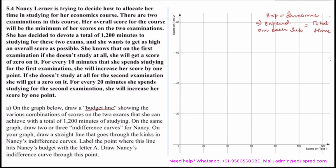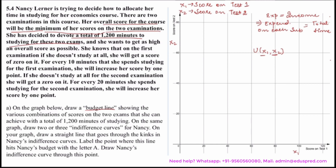Whenever you read such questions, don't get scared by them. We know that her overall score for the exams would be the minimum of the scores on two examinations. So her utility function would be taken in the form of minimum of x1 comma x2, where x1 is the score on test 1 and x2 is the score on test 2. Let's break down the information one by one. We are given that she has decided to devote a total of 1200 minutes to studying for these two examinations — that means her total time is 1200.